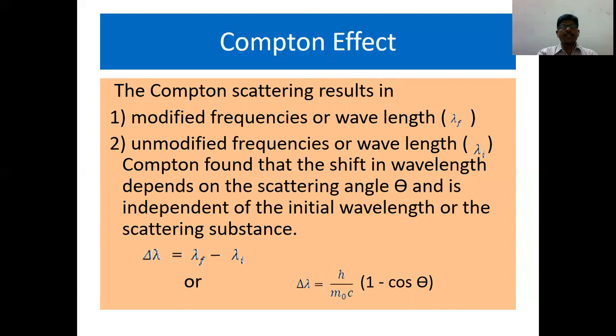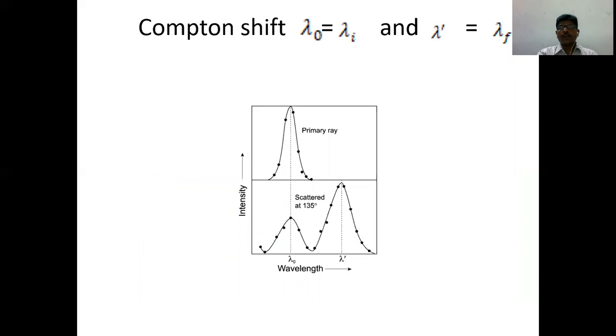As we have already seen, it contains a modified frequency or wavelength and an unmodified frequency or wavelength. This graph is between wavelength along the x-axis and intensity along the y-axis. The wavelength in the Compton effect is measured by using Bragg's law. It is a Bragg's x-ray spectrometer which captures these x-ray photons, and using Bragg's law we are able to calculate the value of lambda. What does Bragg's law state? It is 2d sin theta is equal to n lambda.